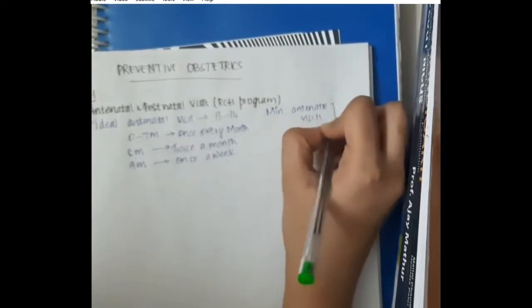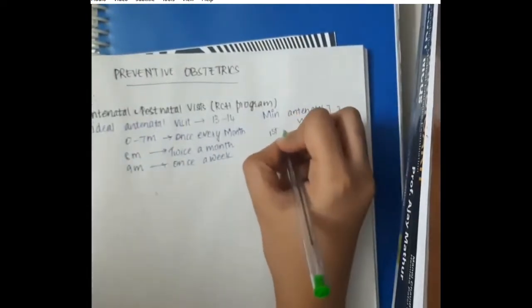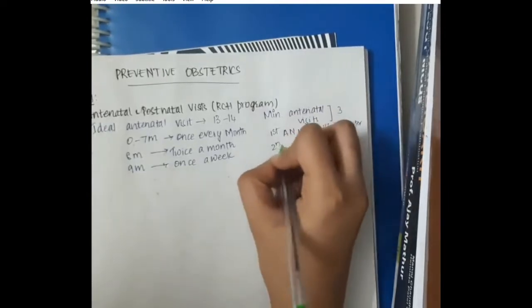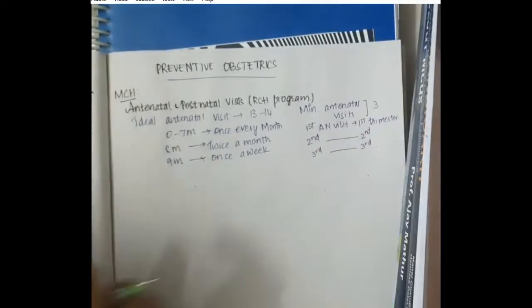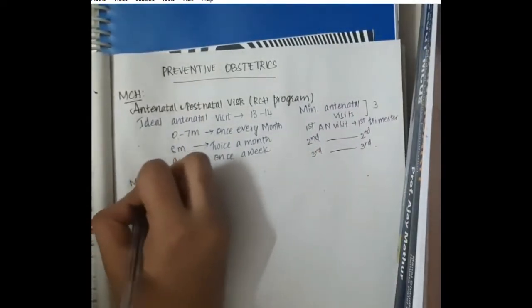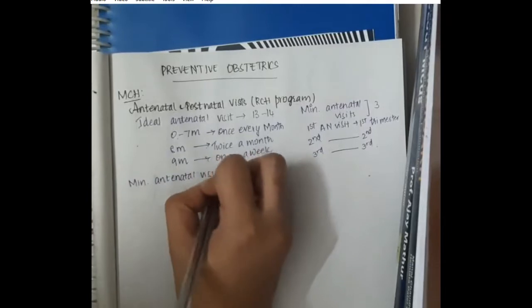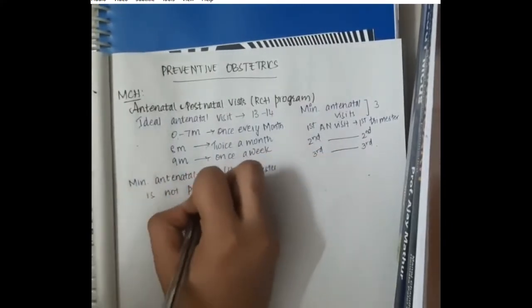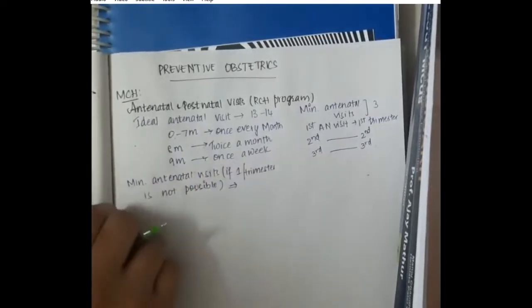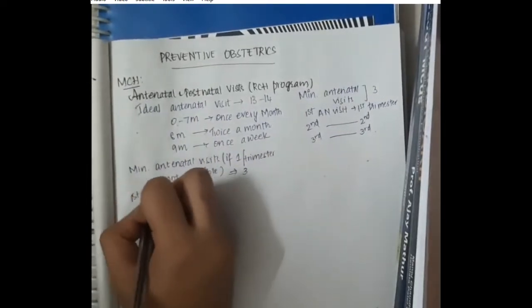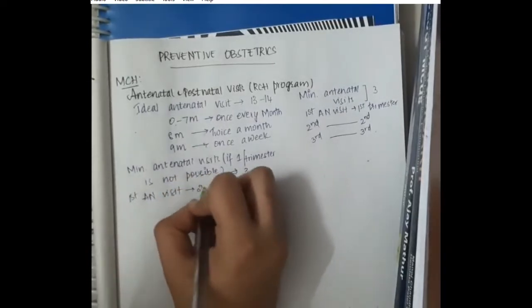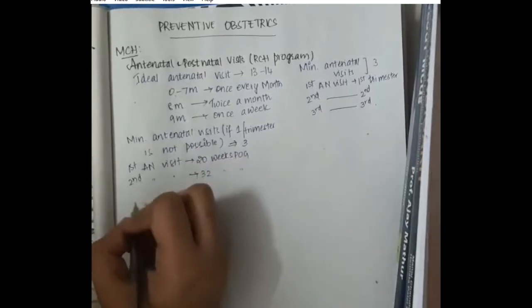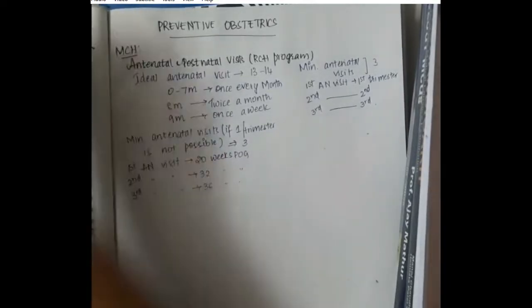But sometimes, some people are not capable of undergoing ideal antenatal visits. In them, we do minimum antenatal visits which should be 3. First antenatal visit in first trimester, second antenatal visit in second trimester, and third antenatal visit in third trimester. What about the minimum antenatal visits if one per trimester is not possible? Then also there should be 3 antenatal visits. First antenatal visit should be at around 20 weeks of period of gestation. Second antenatal visit should be 32 weeks of period of gestation.